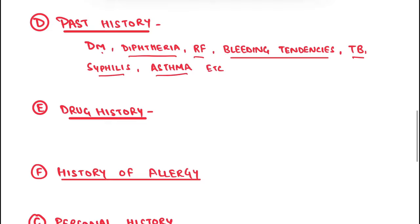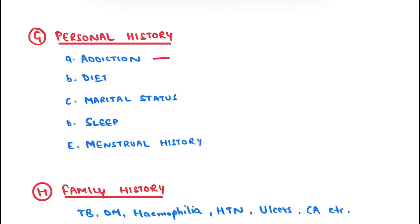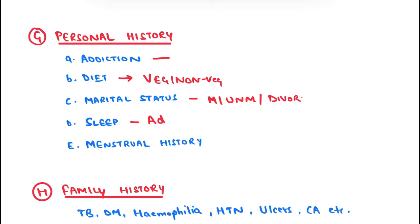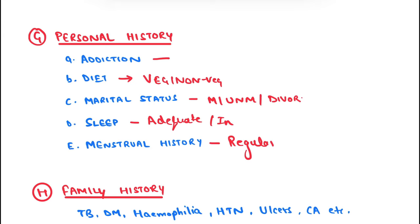Coming to personal history — ask about addiction: whether the patient is taking tobacco or alcohol, and how much per day. Ask about diet: whether they are vegetarian or non-vegetarian. Ask about marital status: married, unmarried, or divorced. Also ask about sleep: whether it is adequate or inadequate. In women, ask about menstrual history: whether it is regular or irregular.